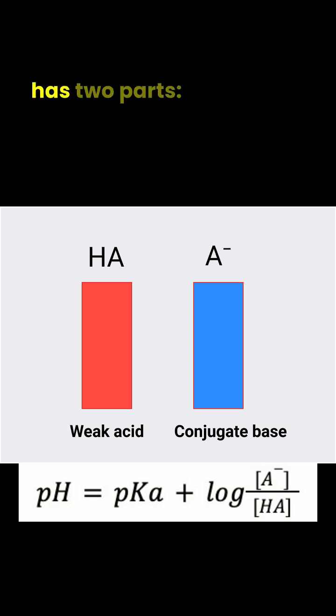This equation has two parts. pKa, which comes from the weak acid's dissociation constant. The Ka value is usually given in the question or from a standard table, and you calculate pKa by taking the negative log of Ka.